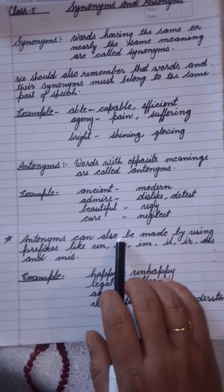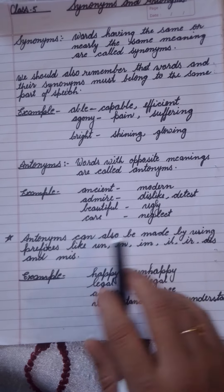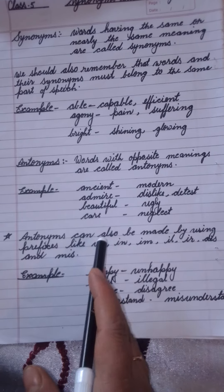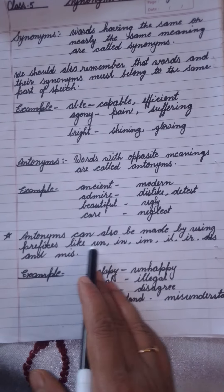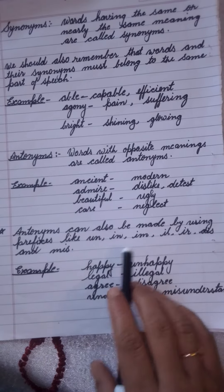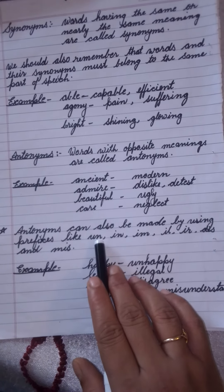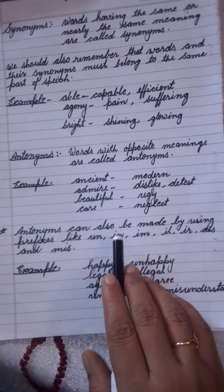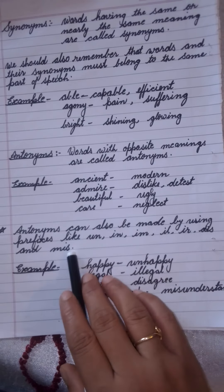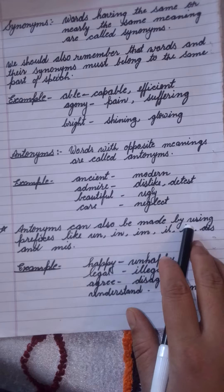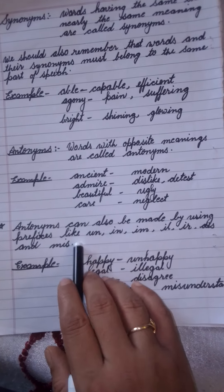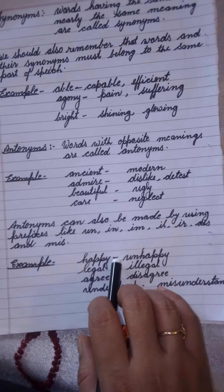Antonyms can also be made by using a prefix. A prefix means you will add these words before another word and you will get antonyms. The prefixes are: un-, in-, im-, il-, ir-, dis-, mis-. When we add any of these before a word, it will make the antonym of that word.